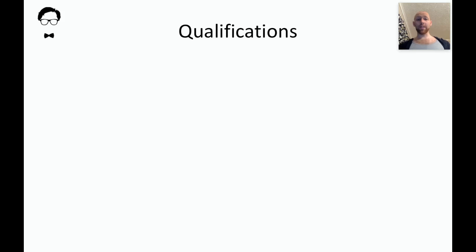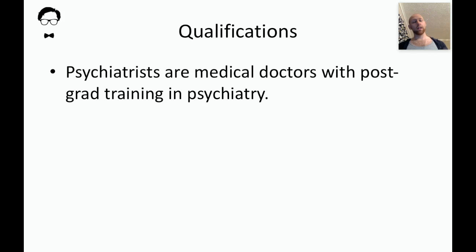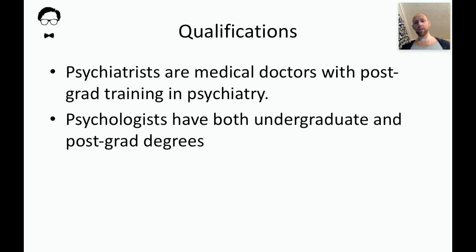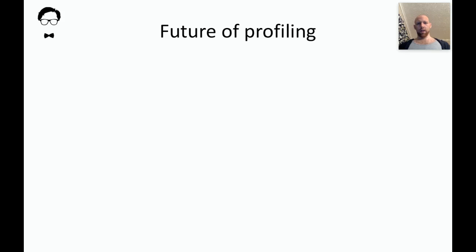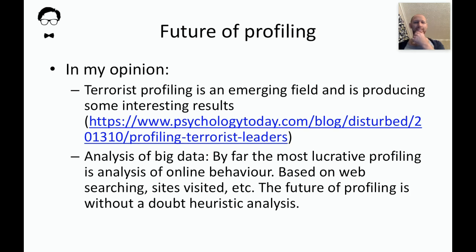In terms of qualifications needed to become a profiler: a psychiatric qualification is useful — these are medical doctors who specialize in psychiatry. Psychologists tend to have both undergraduate and postgraduate degrees. Police profilers tend to have a degree in psychology at postgraduate level. It's hard to get into, it's rare, there are very few CSI-types — but the future is data.